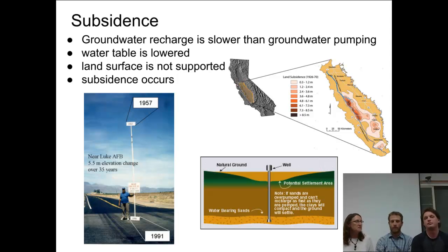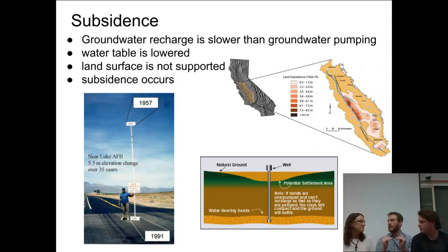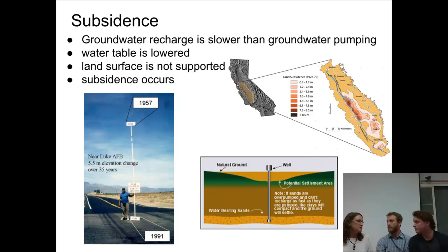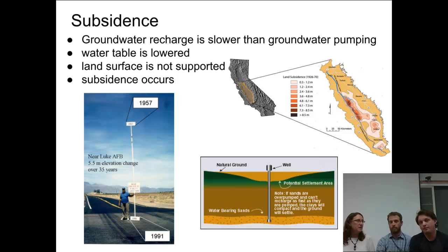Let's start out with subsidence. With subsidence, what happens is if you pump out too much and you don't recharge your aquifer, your ground starts to sink a little bit. I always think of a dried-out sponge when it gets all shriveled up and starts to get smaller. The same thing happens to the land — it can't really be supported without the water there. We've got a map here showing the Central Valley of California, where there's a lot of agriculture, and they have been pumping for many years to irrigate those fields.